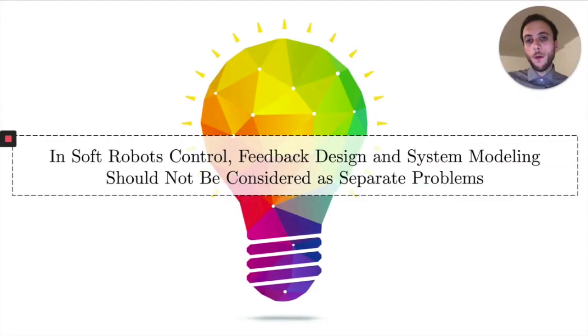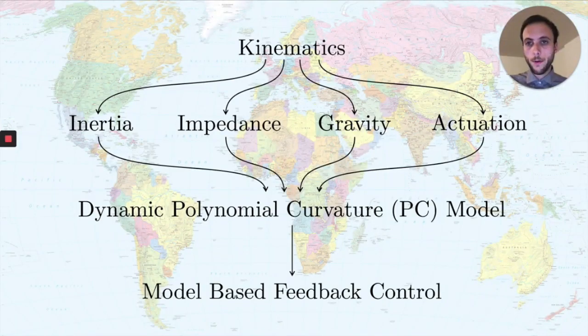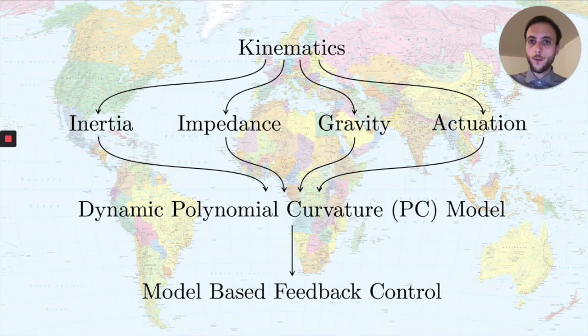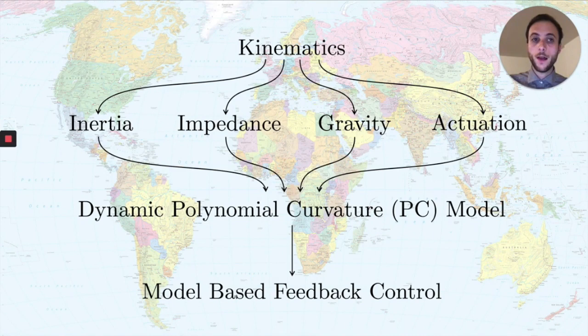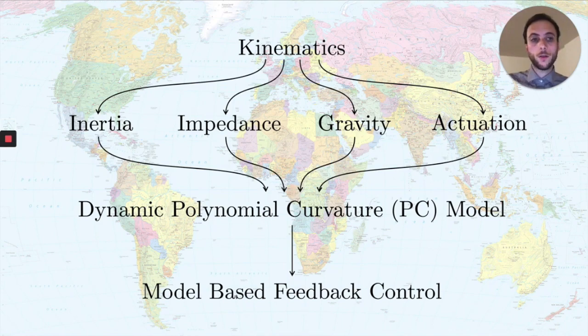What we argue instead in this work is that when you do model-based control with soft robots due to the complexity of the control problem, you have to think about models that are specifically tailored on the control applications. In this paper, we derive such a model in terms of kinematics, in terms of its dynamics, and we draw some conclusions in terms of what we can do as model-based control.